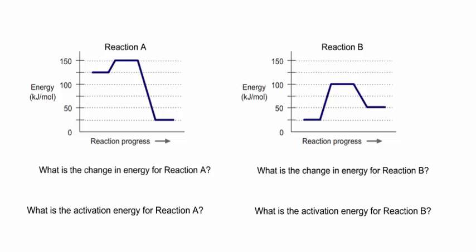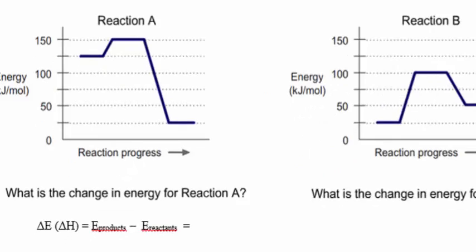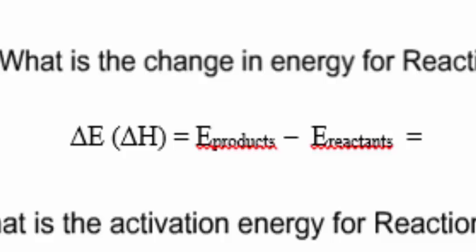First, we'll work on the change in energy. The change in energy, or sometimes called the enthalpy, can be determined using this simple equation: delta E, or sometimes it's noted as delta H, equals the energy of the products minus the energy of the reactants.